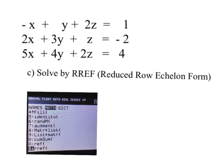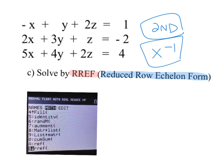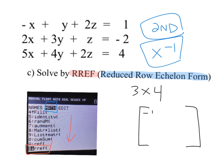Our last method is solving by putting the matrix in reduced row echelon form, abbreviated RREF. Go to your matrix menu (2nd, then the inverse button), move the cursor to the math menu, scroll down to letter B — reduced row echelon form, RREF. Set up a 3×4 matrix with the coefficients of each variable: x-coefficients -1, 2, 5; y-coefficients 1, 3, 4; z-coefficients 2, 1, 2.